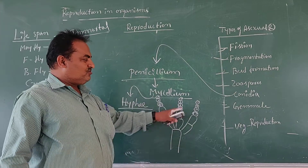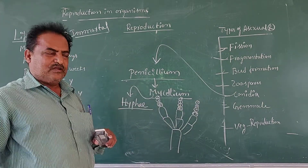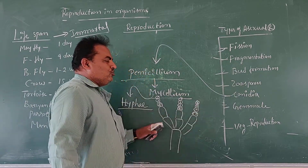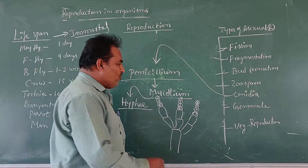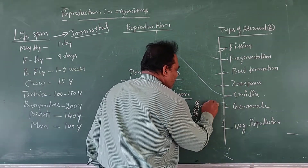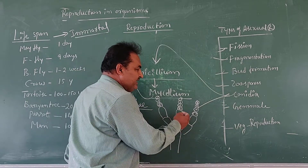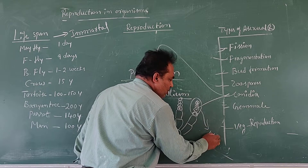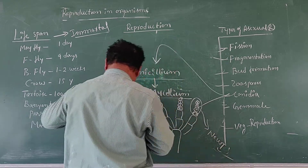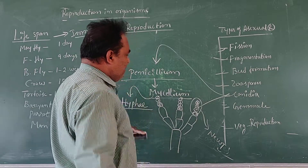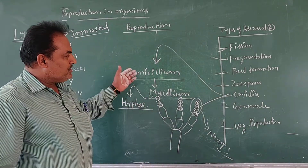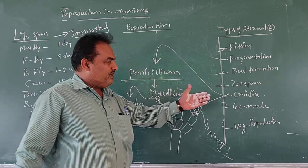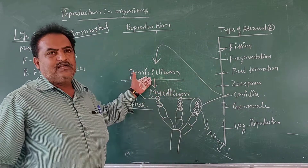These non-motile structures do not have flagella or cilia, therefore they are non-motile. Such non-motile structures are called conidia. After the detachment of conidia, these structures develop into new individuals. This kind of reproduction is commonly found in the case of Penicillium. The best example for conidia reproduction is Penicillium.